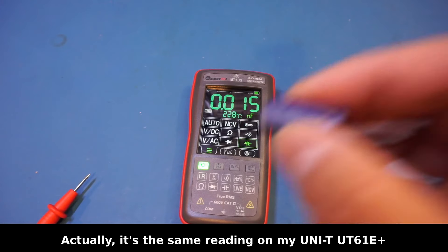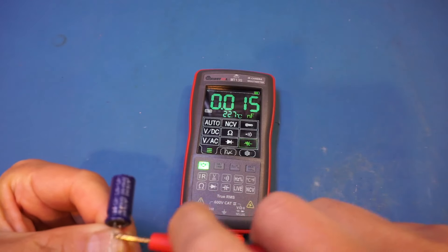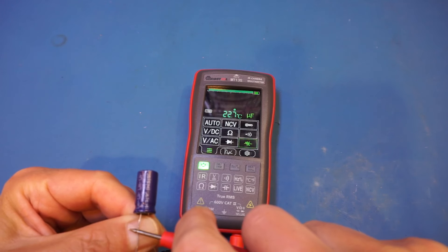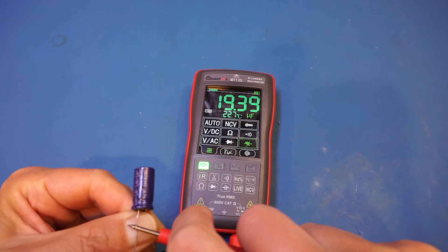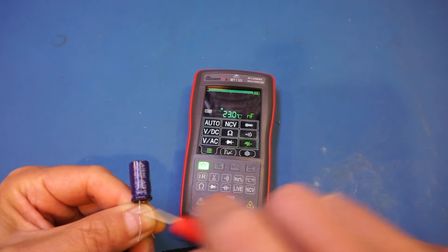Now let's take a look at a 22 uF capacitor. It's measuring 19. That shouldn't be a problem, but the speed is definitely quite slow.